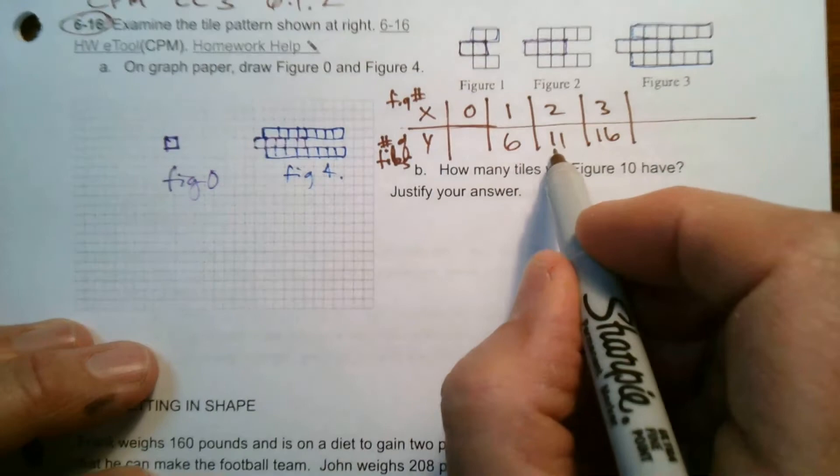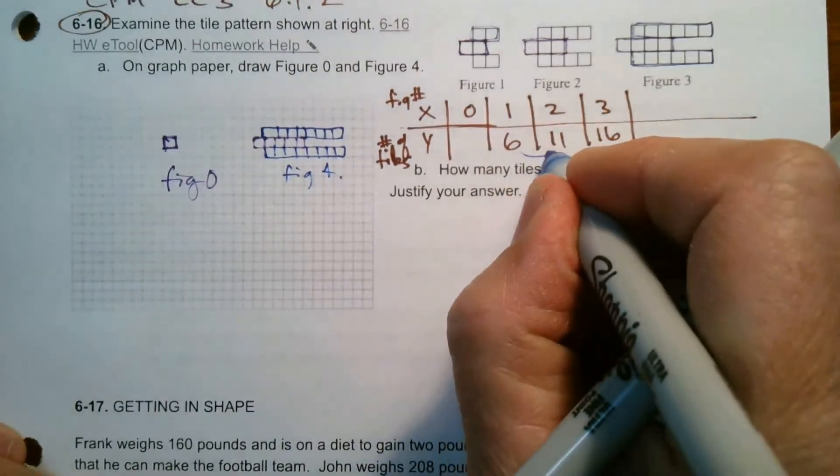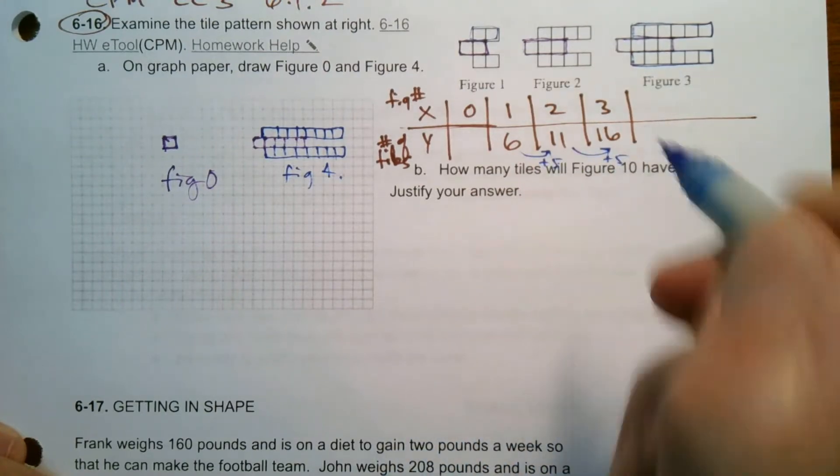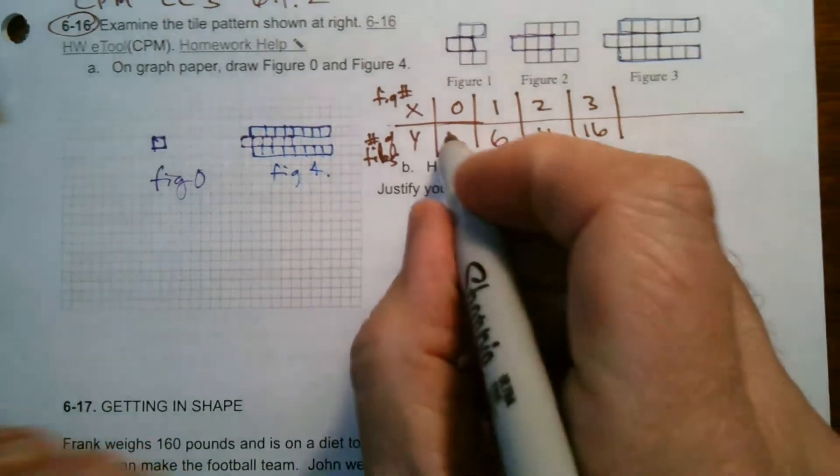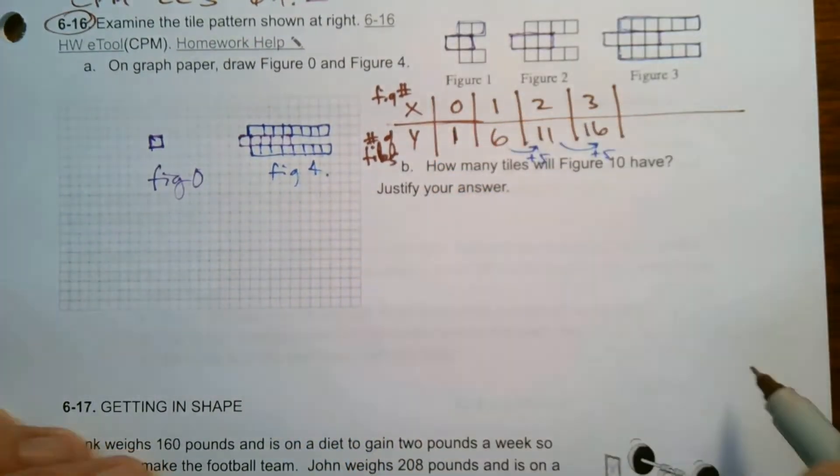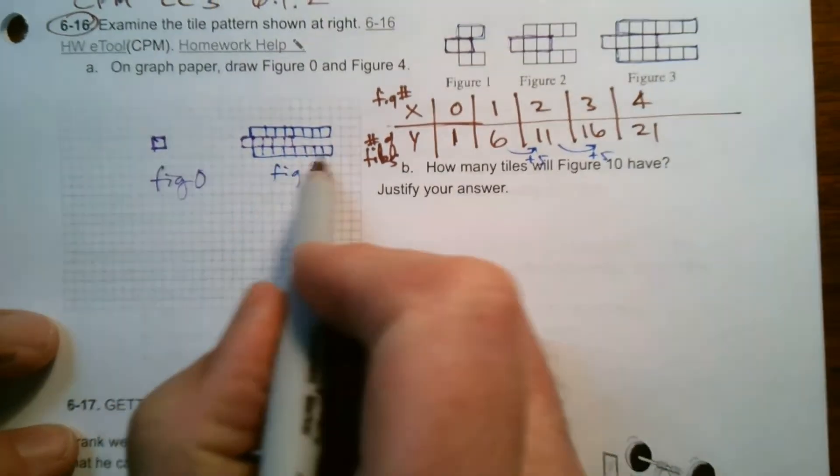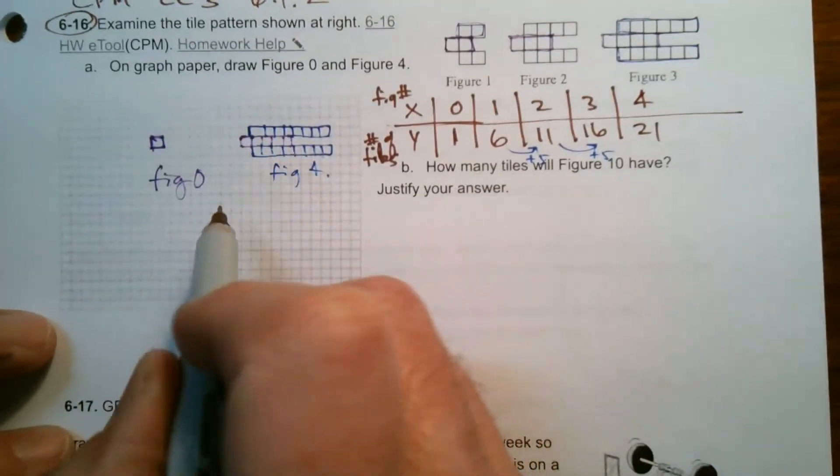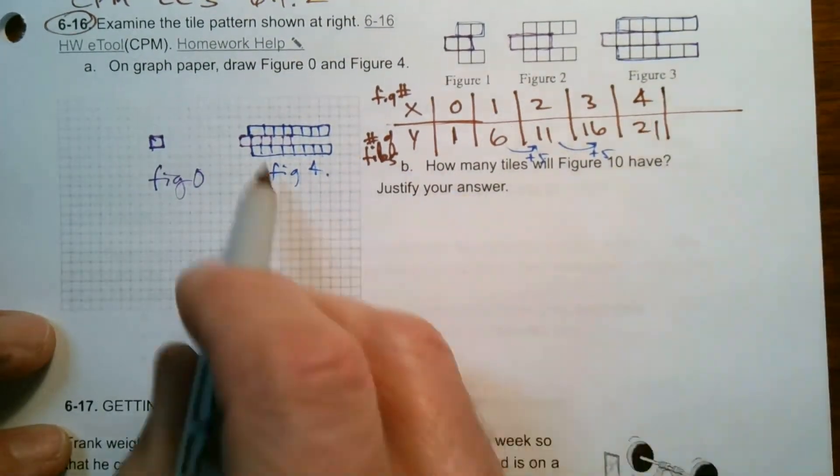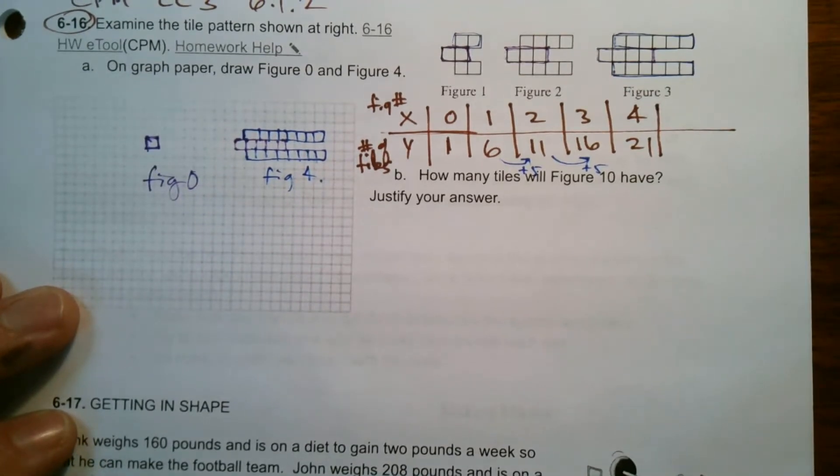I can see here this pattern is increasing by 5 each time. So I'm adding 5 each time. That would tell me that in Figure 0, if I'm adding 5, that should be a 1 because 1 plus 5 is 6. And then Figure 4 should have 21. If I go back and count what I had, I had 8, 8, and 5, which does add up to 21 tiles. So that confirms what my figures should look like and how many tiles I have.